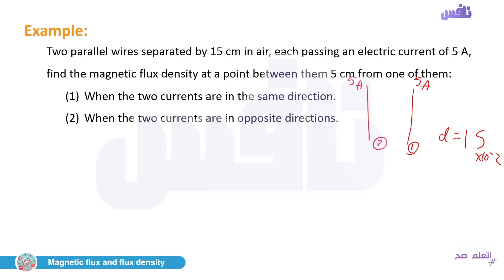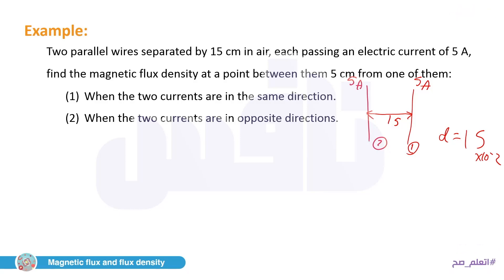Find B₁ using d = 5 cm: B₁ = (2 × 10⁻⁷ × 5) / 0.05 = 2 × 10⁻⁵ T. Find B₂ using d = 10 cm: B₂ = (2 × 10⁻⁷ × 5) / 0.10 = 1 × 10⁻⁵ T.